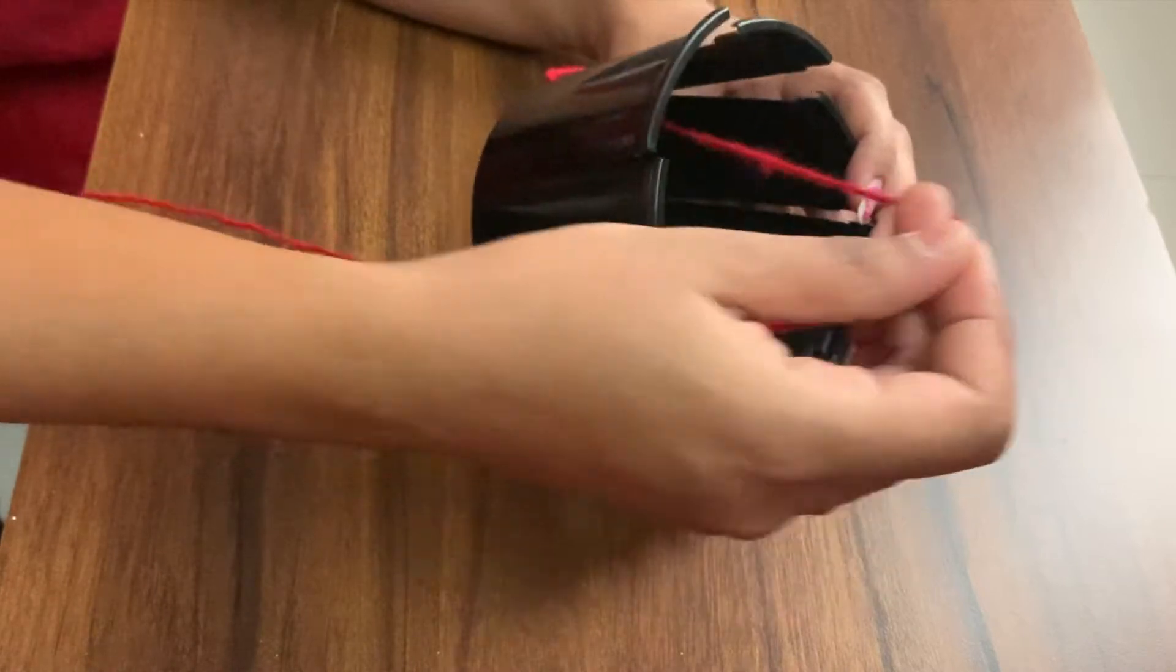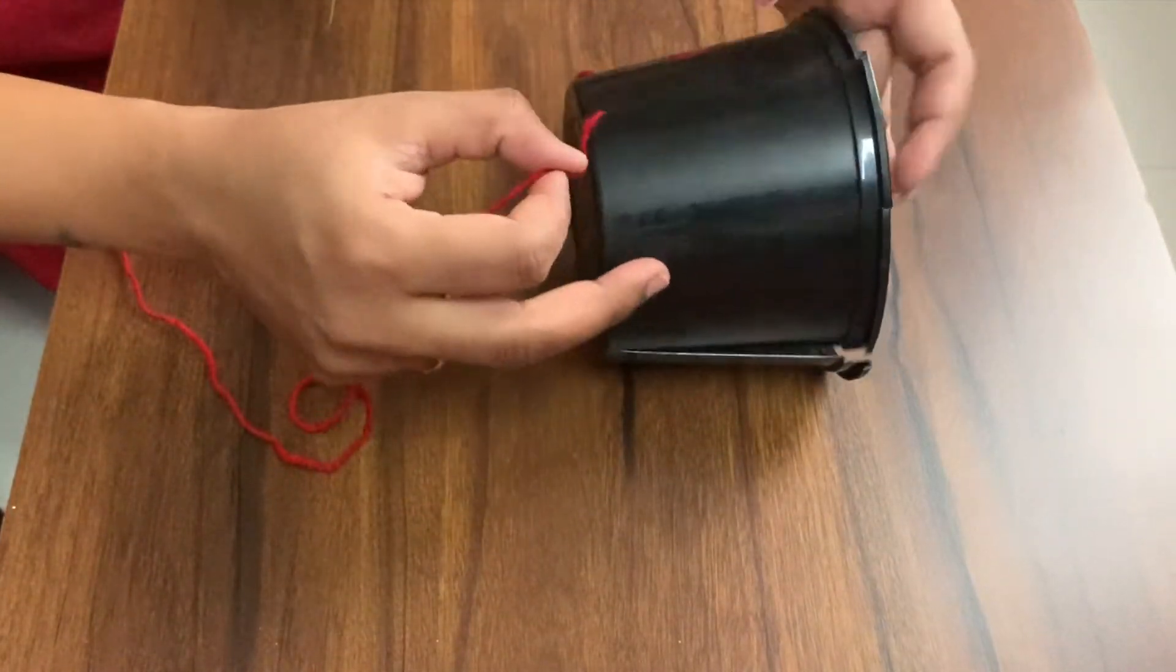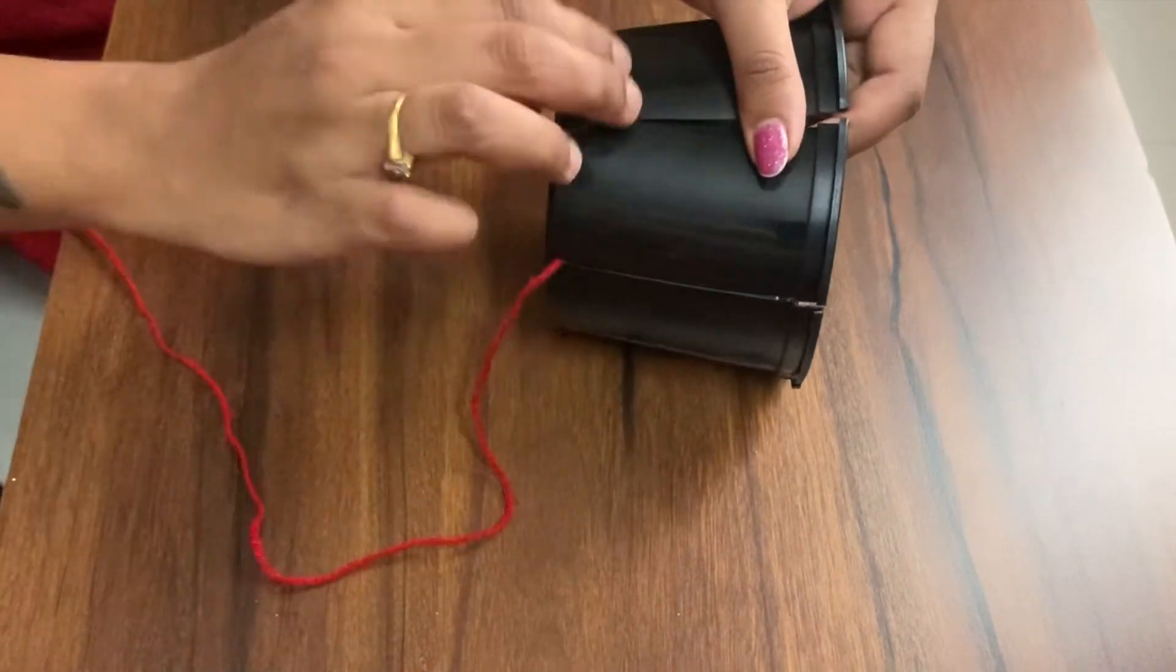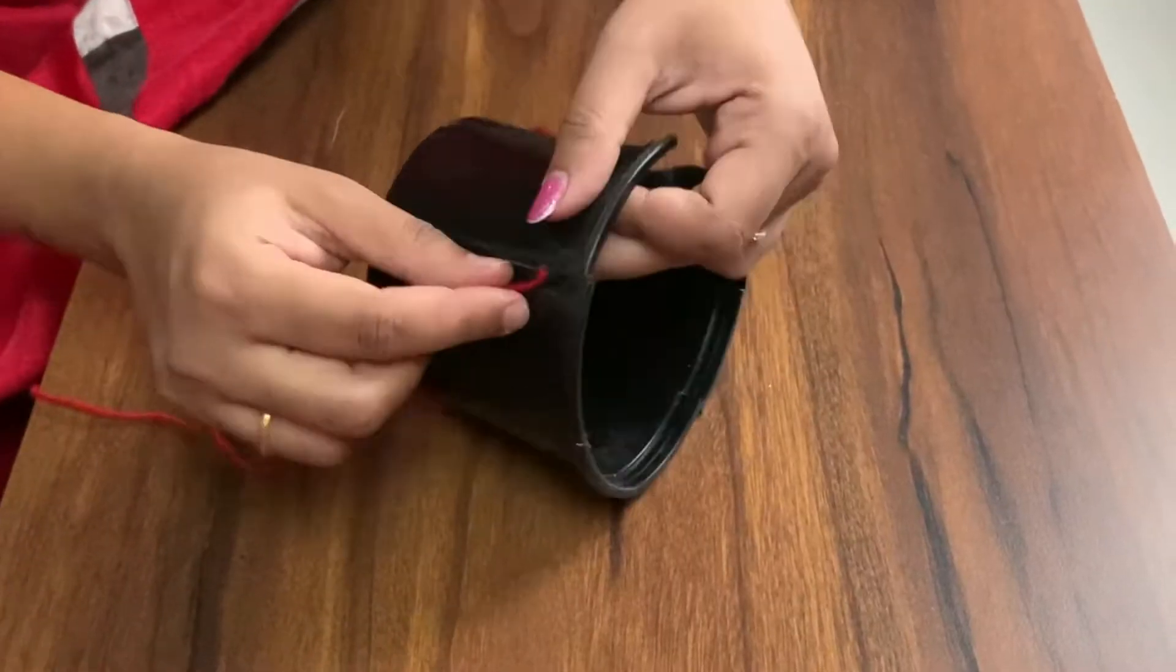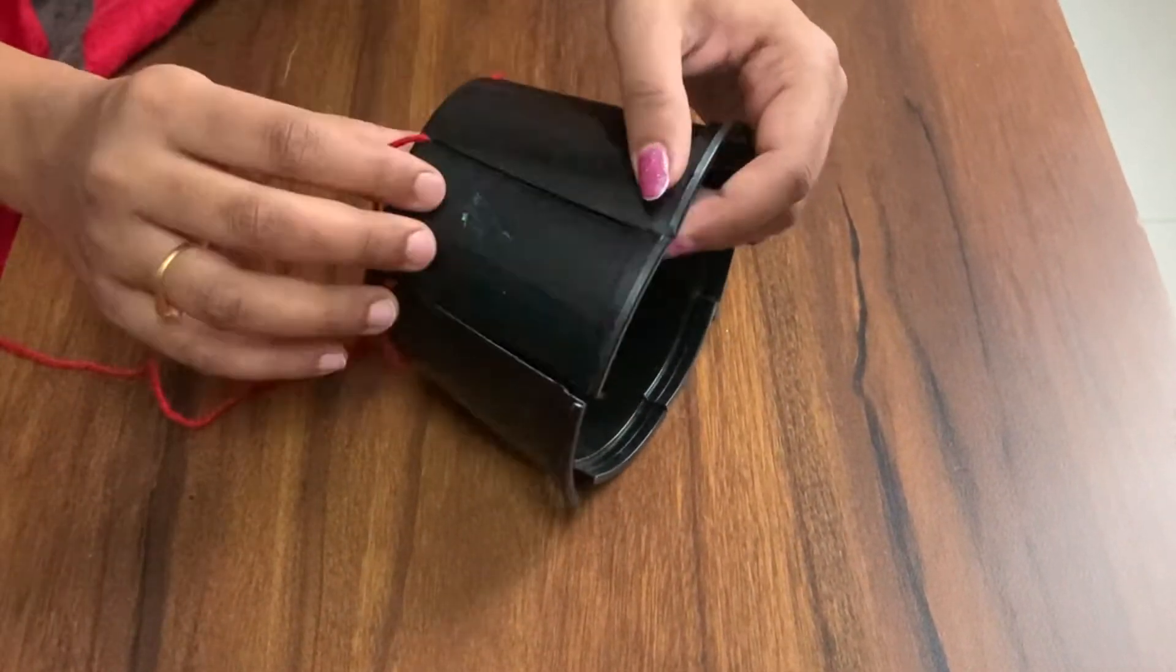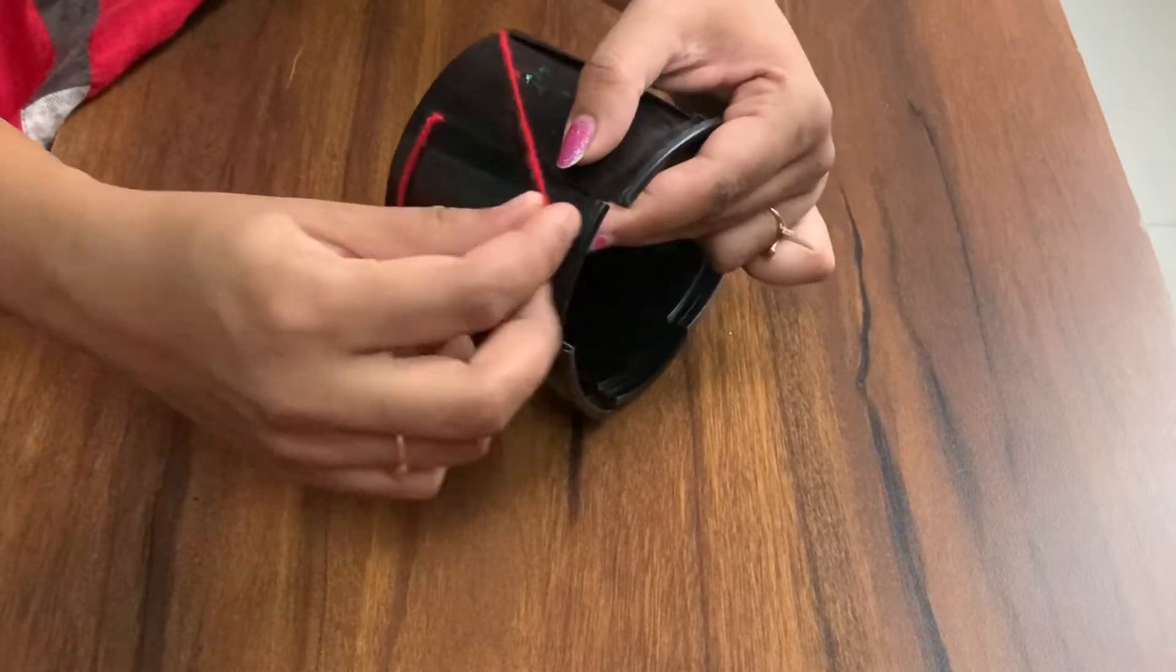Now the next strand, we will remove it from the bottom. So basically we have to repeat this process. We will remove it from the top and remove it from the bottom. Inside-out, inside-out is the kind of process that we are going to follow till we reach the end.